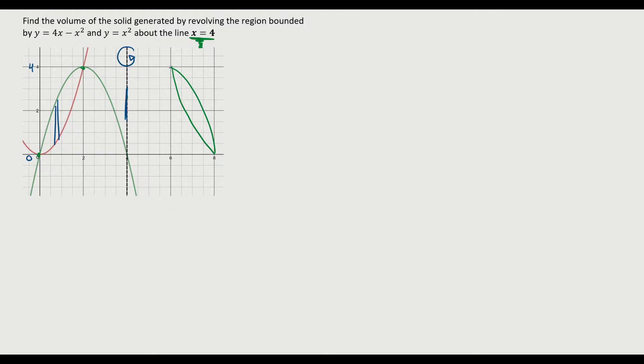Well, that means when I'm doing the shell method, I know the volume is equal to 2 pi times the integral from a to b of the radius times the height times dx because I'm integrating with respect to x. But now I need to find my radius, I need to find my height. Both of those are functions, a variable, something that's changing.